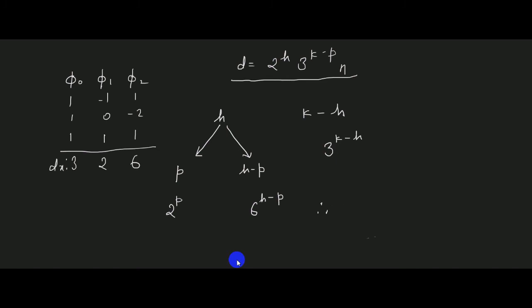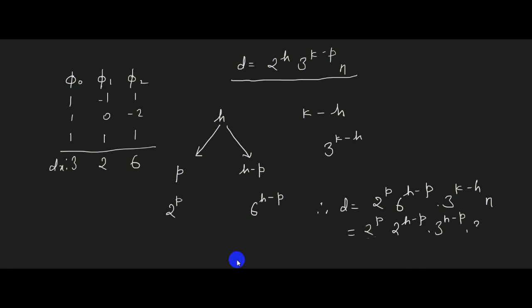Therefore the divisor is 2^p × 6^(h-p) × 3^(k-h) × n. This can be written as 2^p × 2^(h-p) × 3^(h-p) × 3^(k-h) × n. Therefore the divisor D equals 2^h × 3^(k-p) × n.